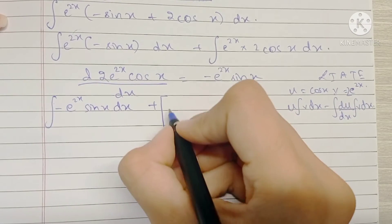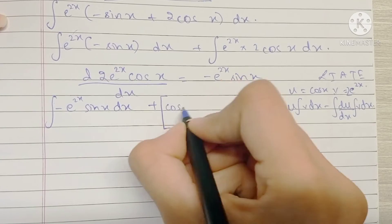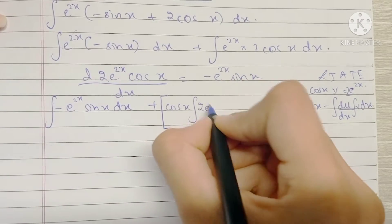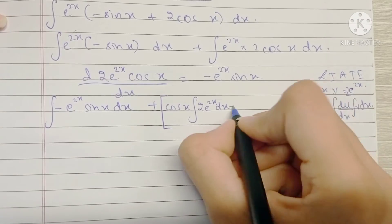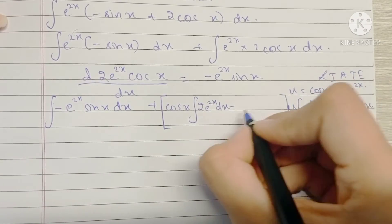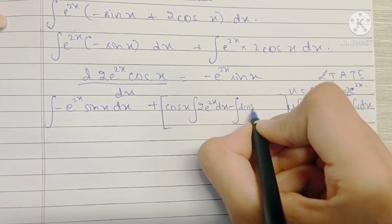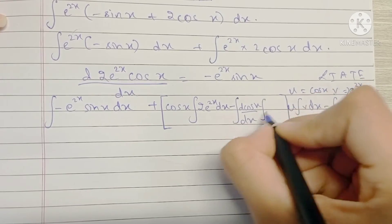Okay, so now we have u into the integral of v minus the integral of differentiation of u into the integral of v.